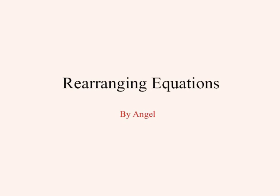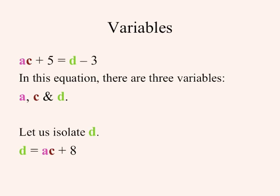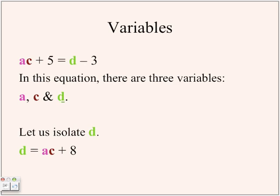Today we're going to rearrange equations and formulas. Firstly, we have to look at the variables in the equation. In this example, a times c plus 5 equals d minus 3, there are three variables: a, c, and d. Let's say you want to isolate d.